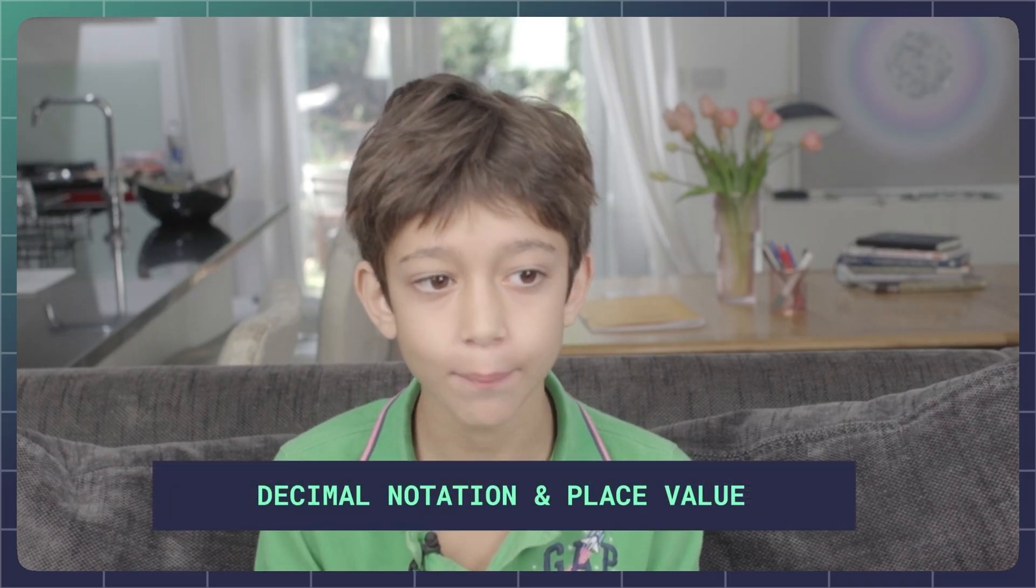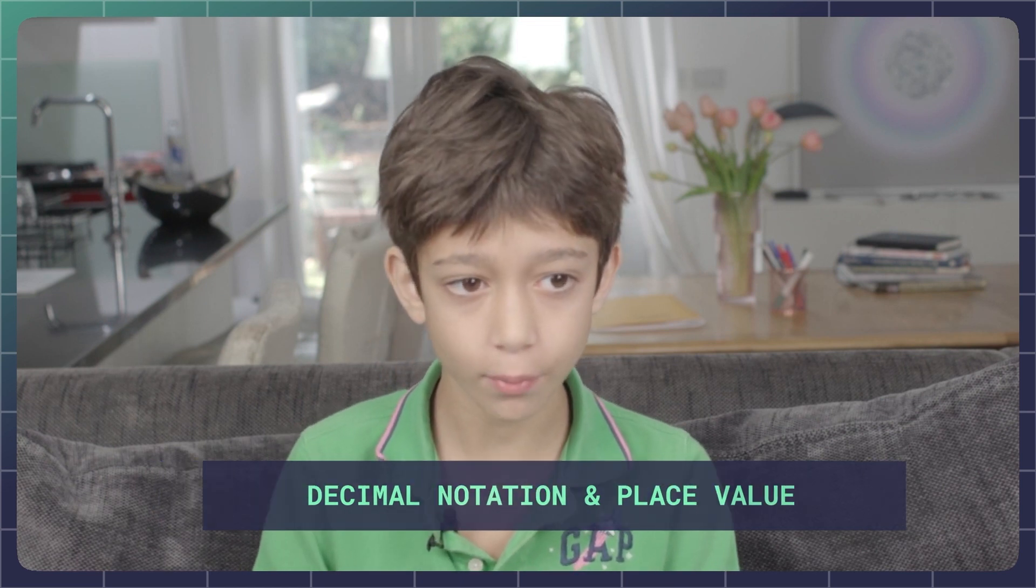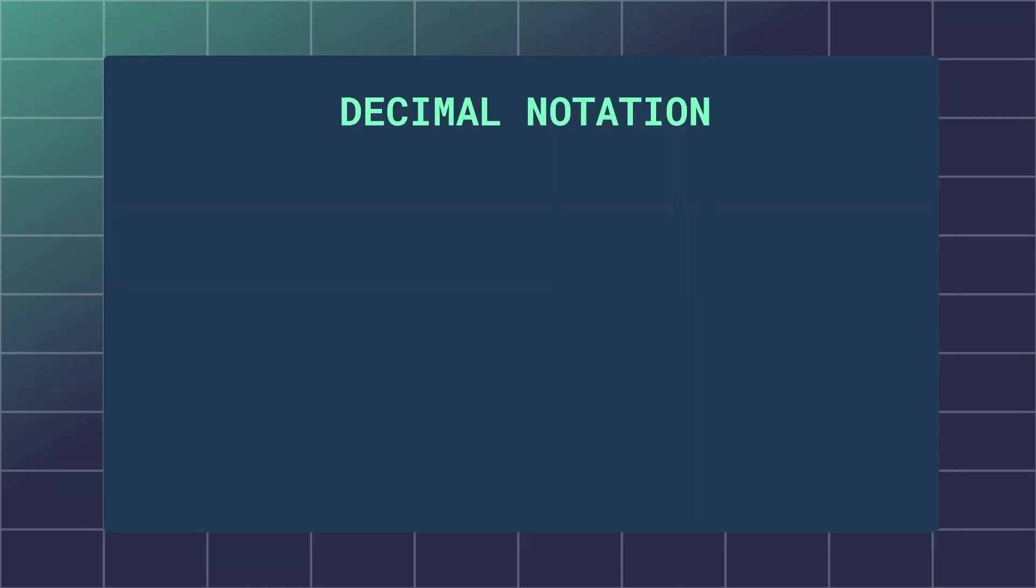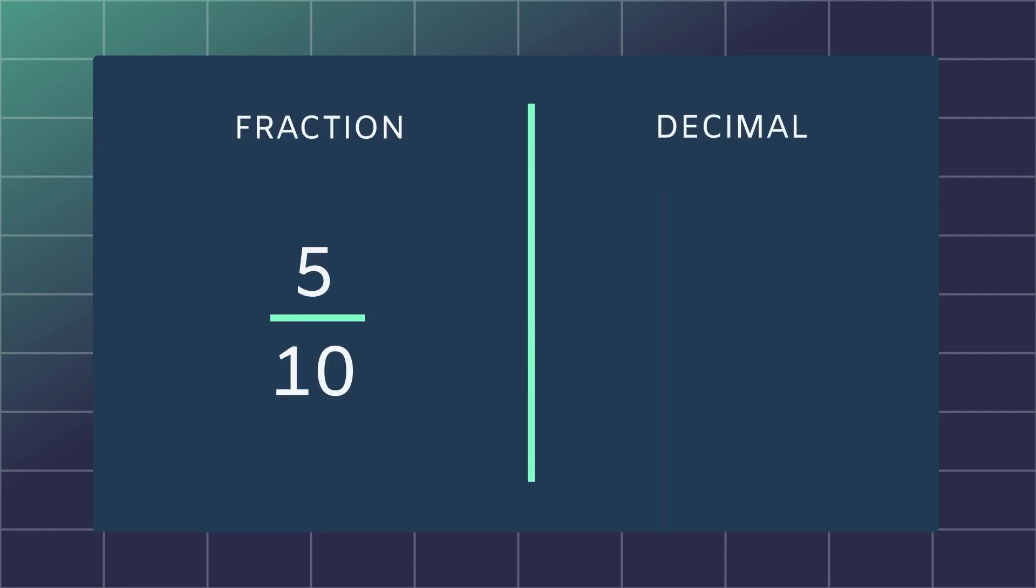Today we'll be breaking down decimal notation and place value. To keep it simple, decimal notation means writing a fraction as a decimal point and a number. For example, five tenths can be written as 0.5.